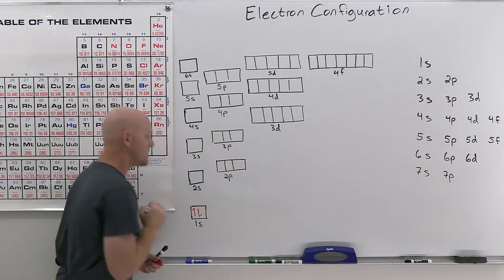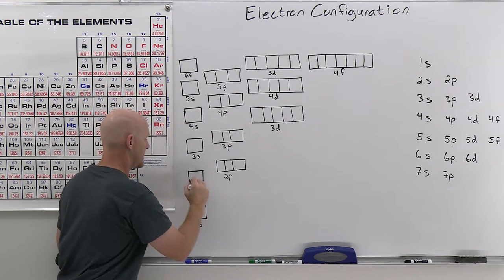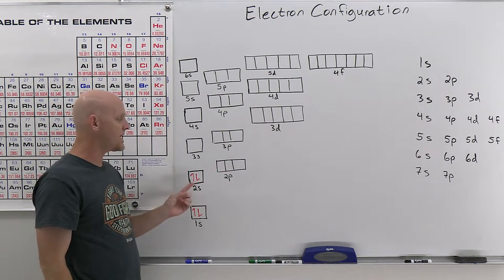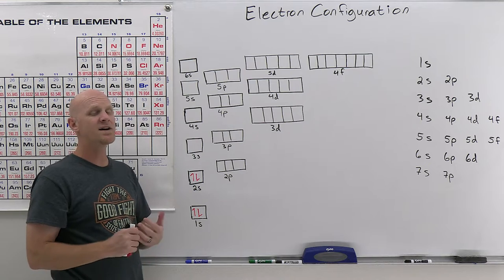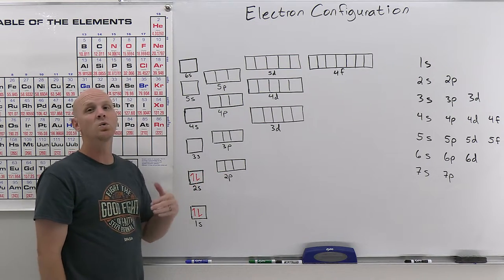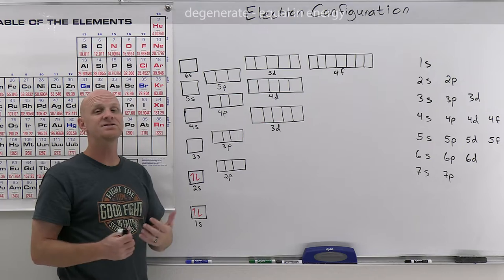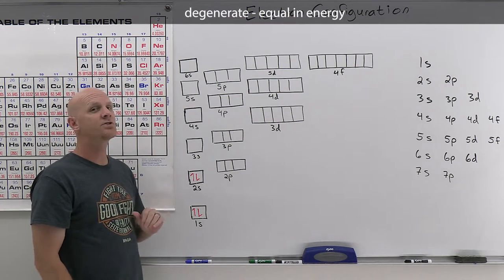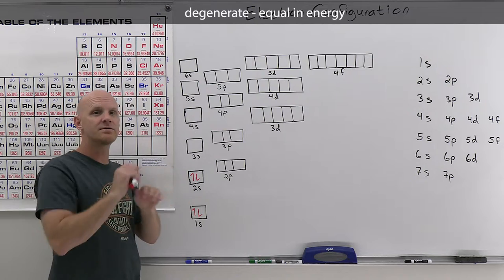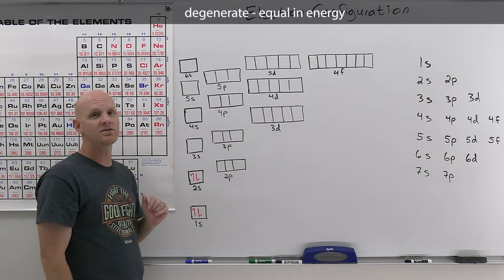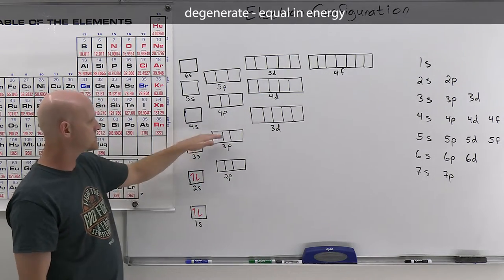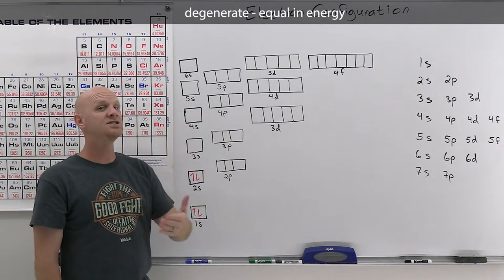Once the 1s is full, we move up to the 2s, put two electrons there, then move over to the 2p. Notice the 2p is higher in energy than the 2s. With hydrogen and only one electron, everything in the same shell — like 2s and 2p — would be equivalent in energy; the word we use is degenerate. However, once you have a multi-electron system, the repulsion between electrons causes the different subshells to split into different energies, and the 2p is higher than the 2s.